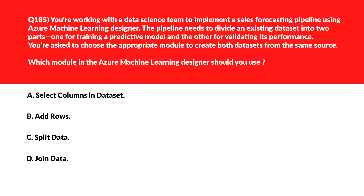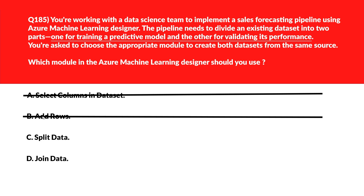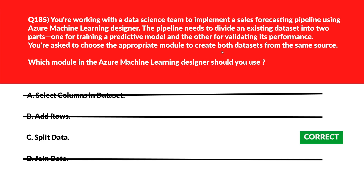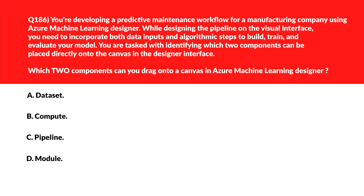This question tests your concepts on Machine Learning Designer. Option A says 'Select Columns in Dataset' — this filters a dataset by column but doesn't divide records for training and validation, so it's incorrect. Option B says 'Add Rows' — adding rows stacks datasets together but doesn't separate them for learning stages, so it's wrong. Option C says 'Split Data' — split data separates data into multiple subsets, allowing distinct portions for model learning and assessment, so let's keep it. Option D says 'Join Data' — join data merges datasets based on key attributes rather than dividing them. We'll lock option C, Split Data, as the right answer.